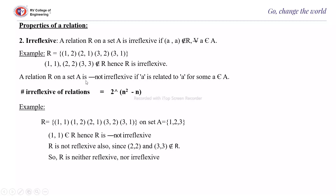A relation on set A is not irreflexive if a is related to a for some a ∈ A. The number of irreflexive relations equals 2^(n²−n), same as reflexive relations — the only difference is that in reflexive relations the diagonal elements are 1, while in irreflexive they are all 0. Example: R = {(1,1),(1,2),(2,1),(3,2),(3,1)} on A = {1,2,3}. Since (1,1) ∈ R, R is not irreflexive. And since (2,2) and (3,3) ∉ R, R is not reflexive either. So R is neither reflexive nor irreflexive.